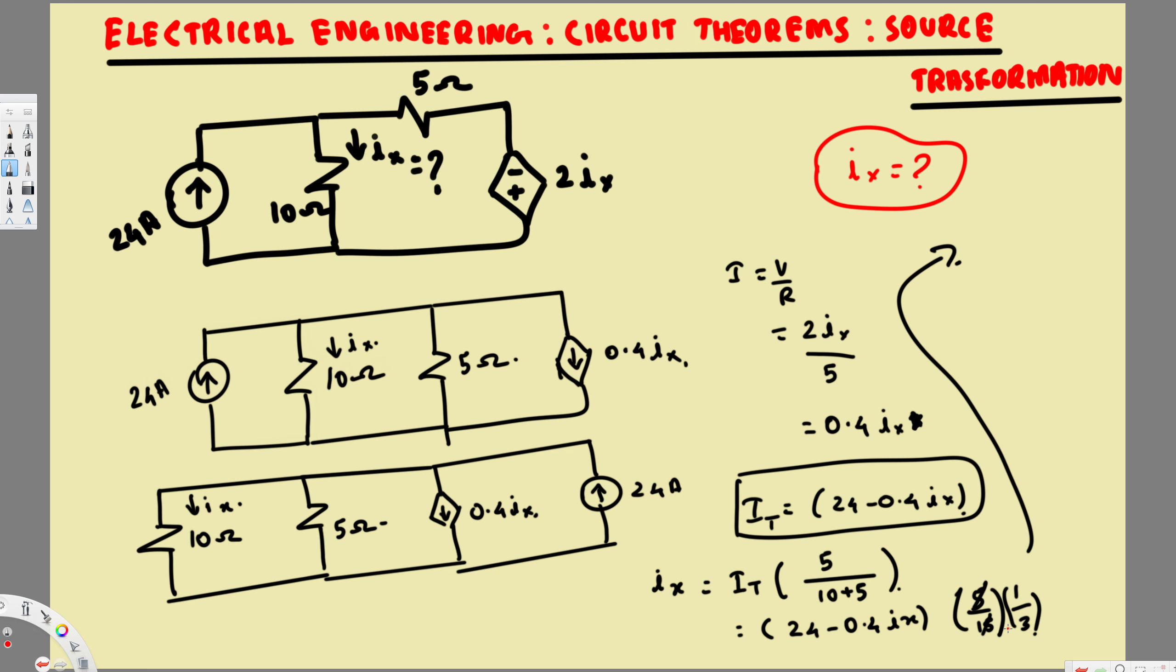So this is 1 over 3. Now to get rid of this denominator 3, I can multiply both sides by 3, so this is going to be 3Ix equals 24.